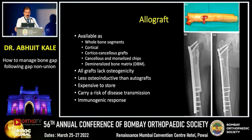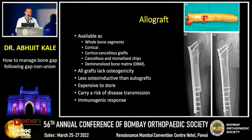Allograft is available as a whole bone segment, cortical fragment, corticocancellous fragment, morselized chips, or demineralized bone matrix. However, these forms lack osteogenicity and have lower osteoinductive power compared to autografts.